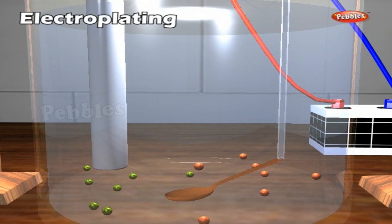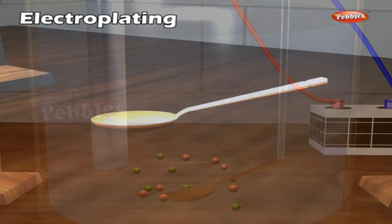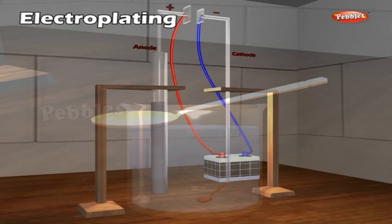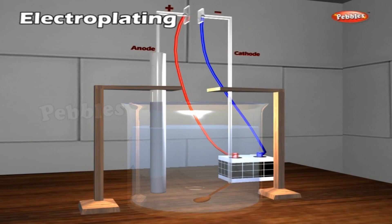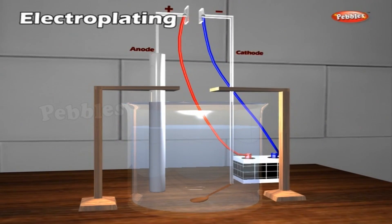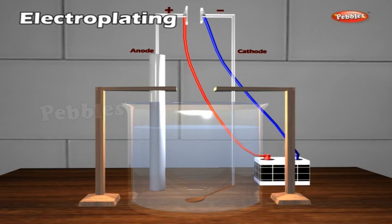Take out the copper spoon and observe it — it will be shining in appearance. During electrolysis, nickel gets deposited on the copper spoon at the cathode, and nickel from the anode dissolves in the solution. This is called electroplating.